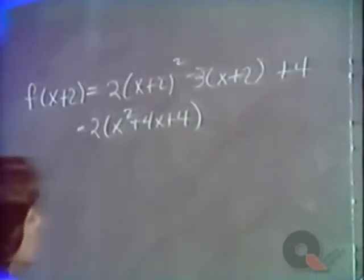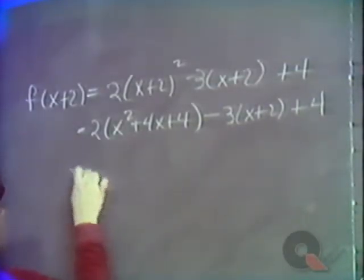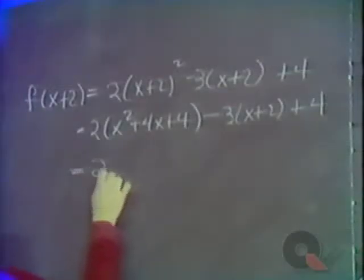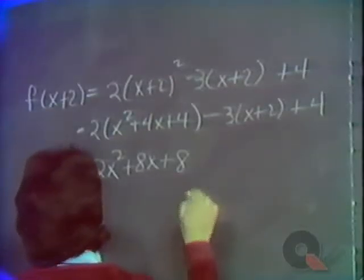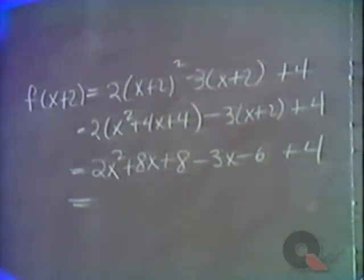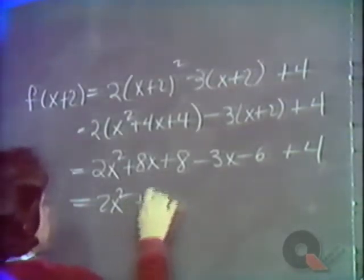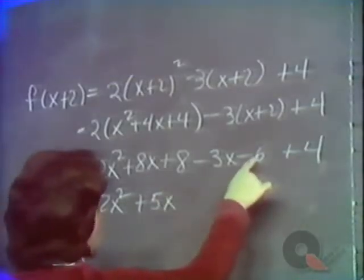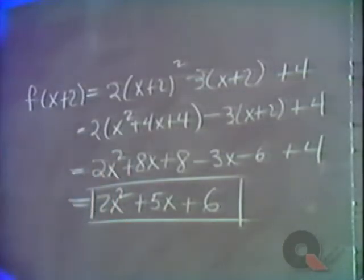So we have 2 times x squared plus 4x plus 4 — it's not just x squared plus 4; don't forget you multiply x plus 2 times itself — minus 3 times x plus 2 plus 4. Distributing the 2 gives 2x squared plus 8x plus 8. Distributing the minus 3 gives minus 3x minus 6, plus 4. Collecting like terms: 2x squared, then 8x minus 3x is plus 5x, then 8 minus 6 plus 4 is 6. So we have 2x squared plus 5x plus 6.